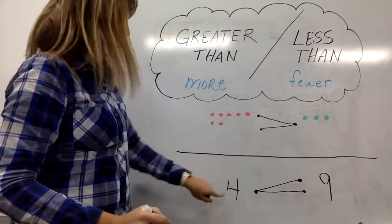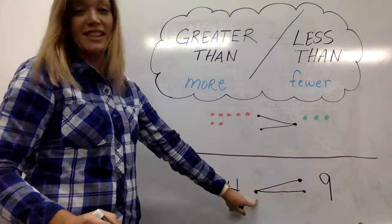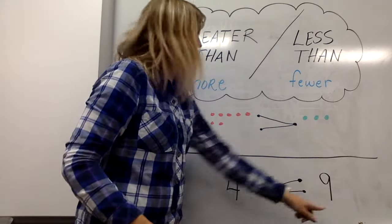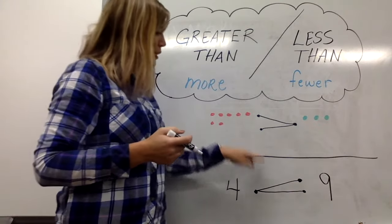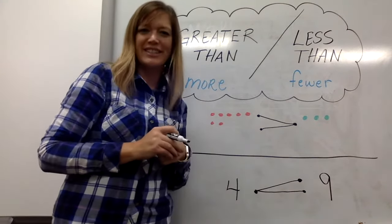I read this as four is less than or fewer than nine. This just helps us make sure that our inequality sign is facing the right direction each time.